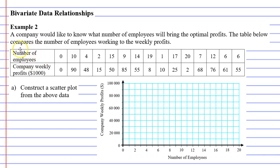When we look at our table we've got the number of employees on the top row and we've got our company weekly profits on the bottom row. That's in thousands of dollars, meaning that 90 means $90,000, 15 means $15,000.